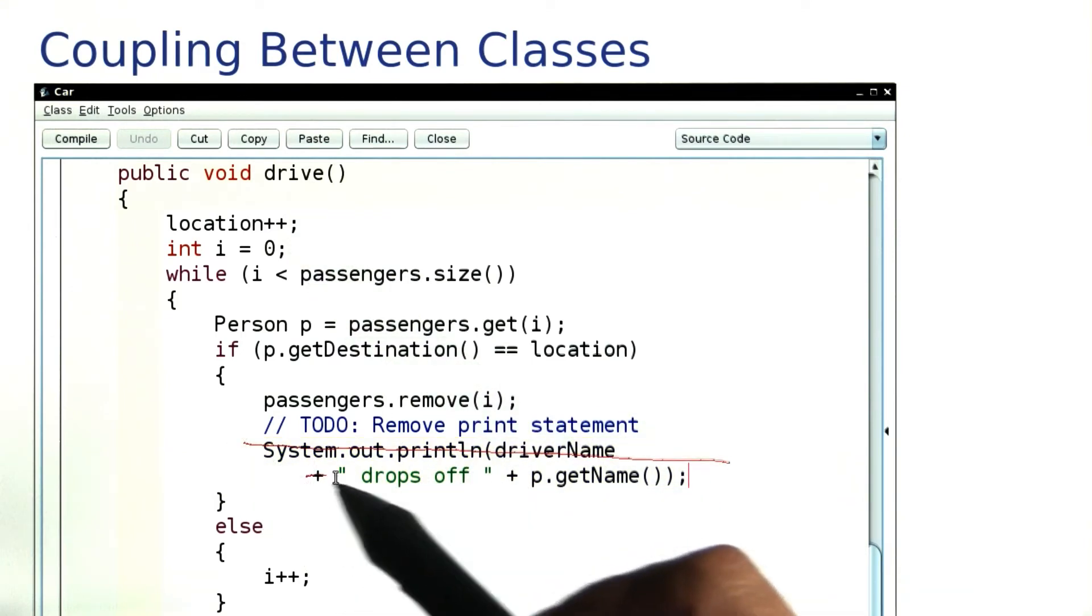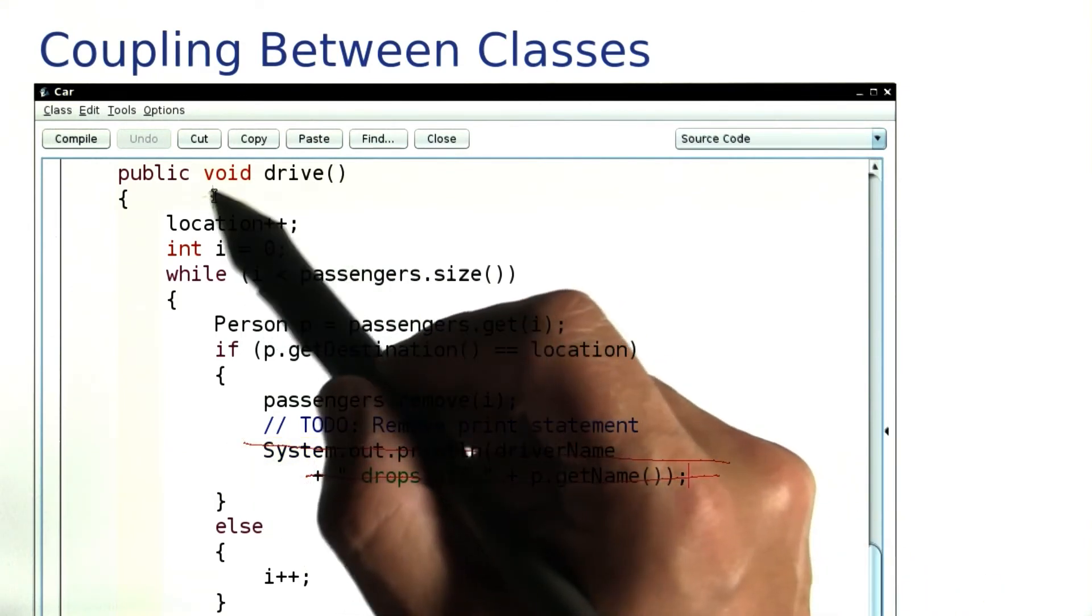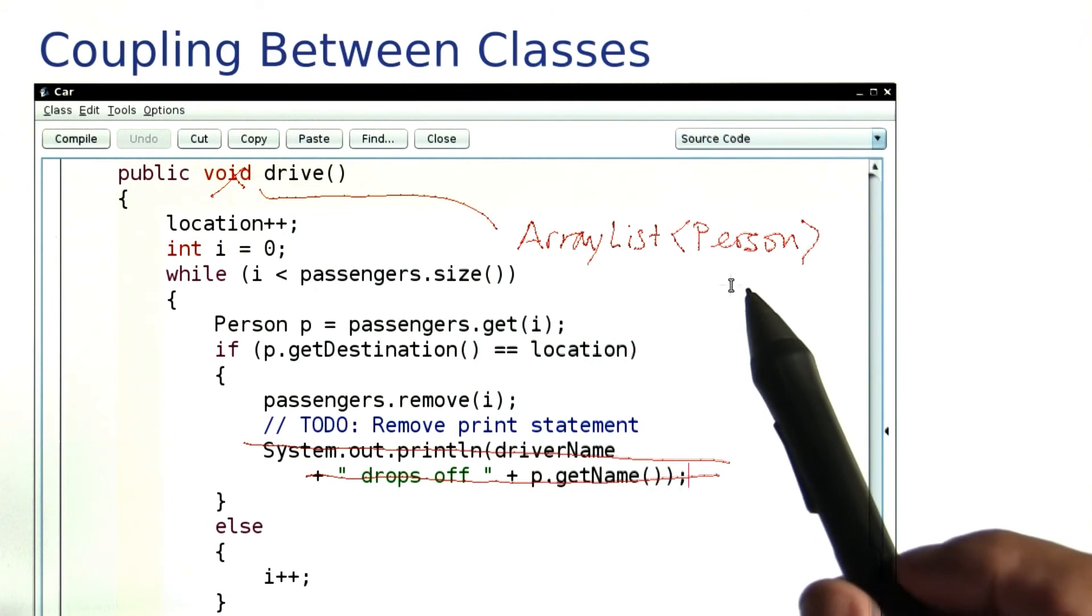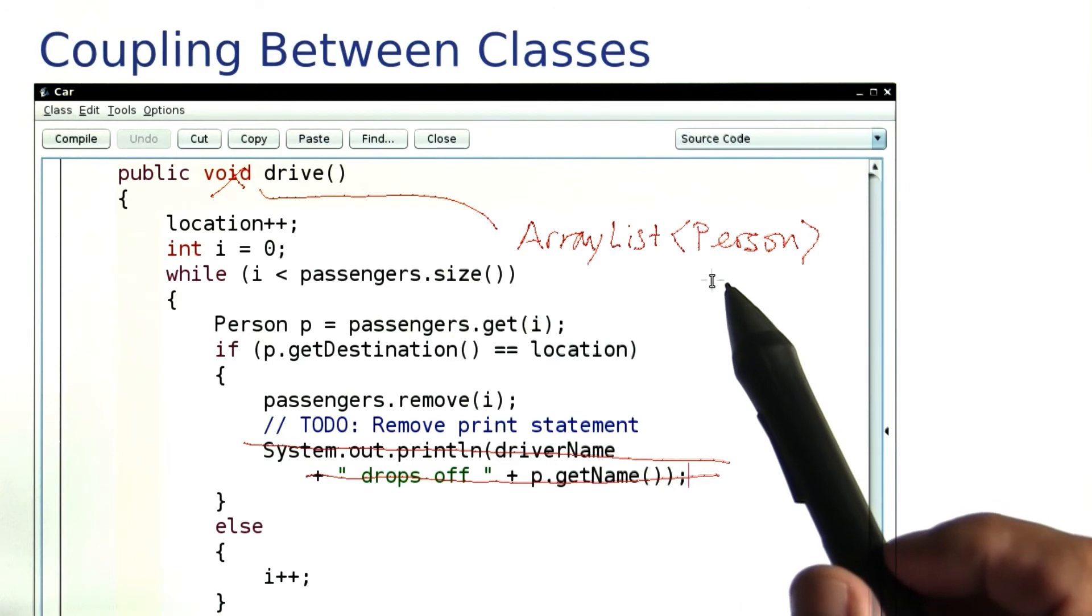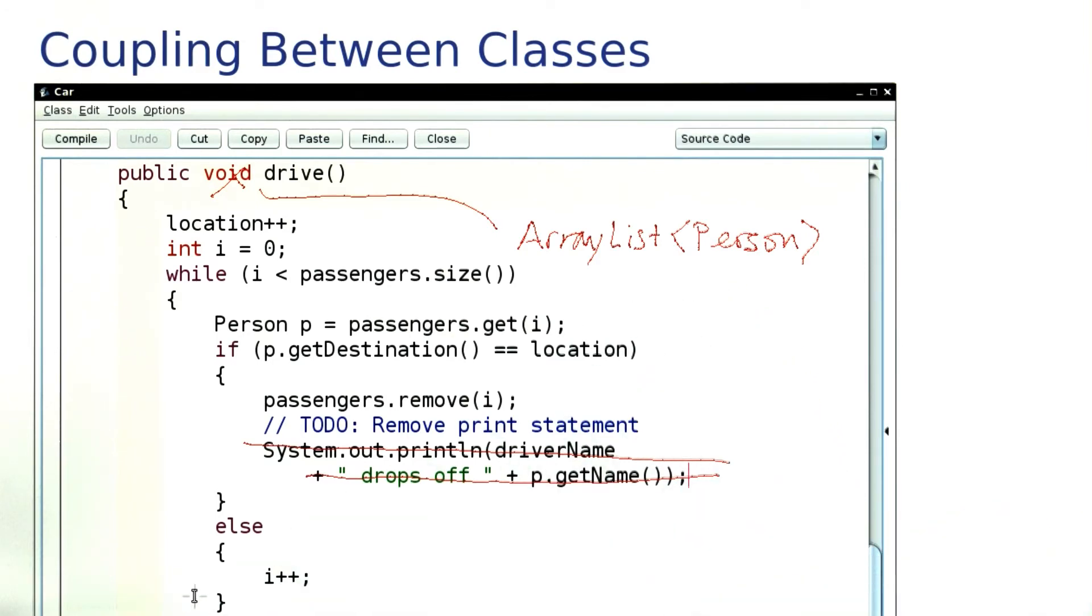So go ahead, take this out, change the return type so that it now returns an ArrayList of Person. Each time you remove a passenger, stick it into that ArrayList, and at the end of the method, return that ArrayList.